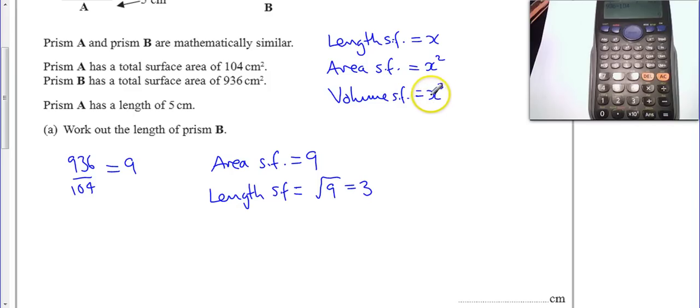Let's see that. So the length gets 3 times bigger. All we've got to do, we've got to do the 5 - if we go from A to B, it's got to get 3 times bigger, which means the length will be 15.